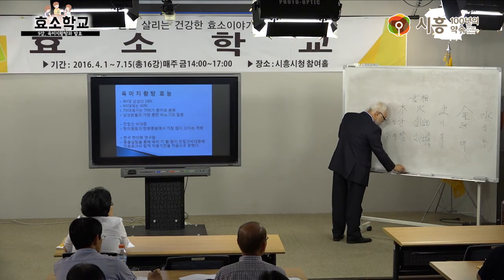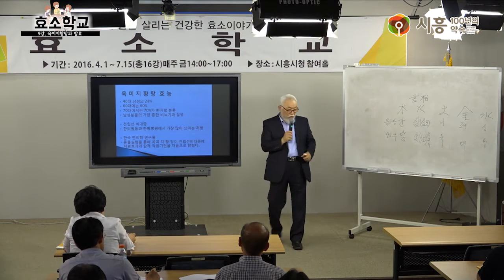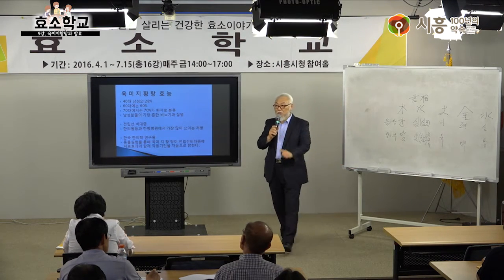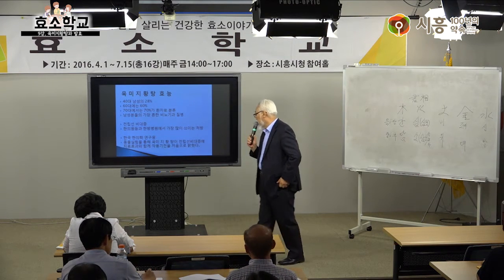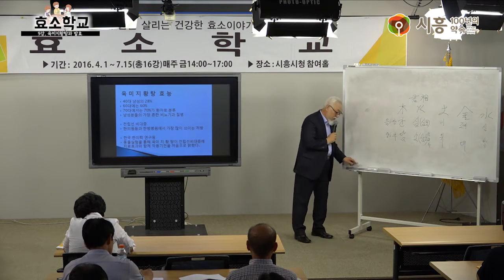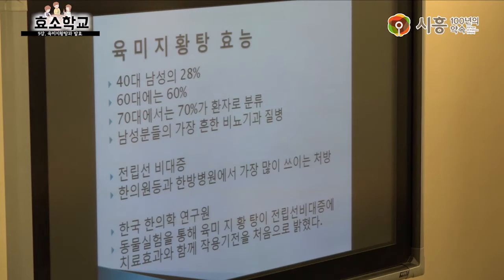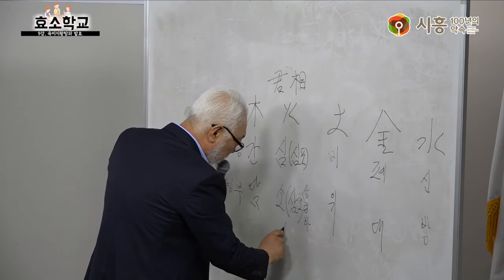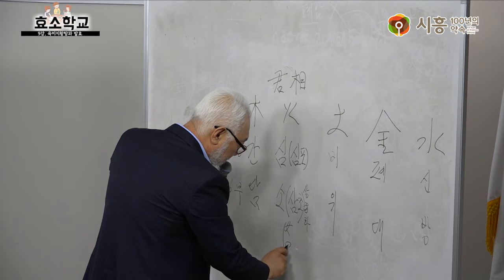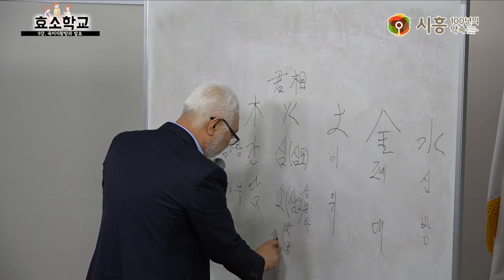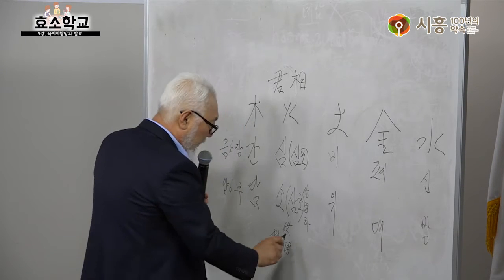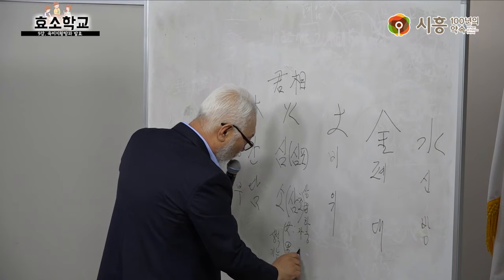당귀는 식욕을 좋게 하는 약으로도 쓰입니다. 사물탕이나 십전대보탕에 당귀가 반드시 들어가서 몸을 따뜻하게 하고 살이 찌기도 합니다. GOT, GPT 검사는 내 몸속에 남아있는 효소량을 검사하는 것입니다.